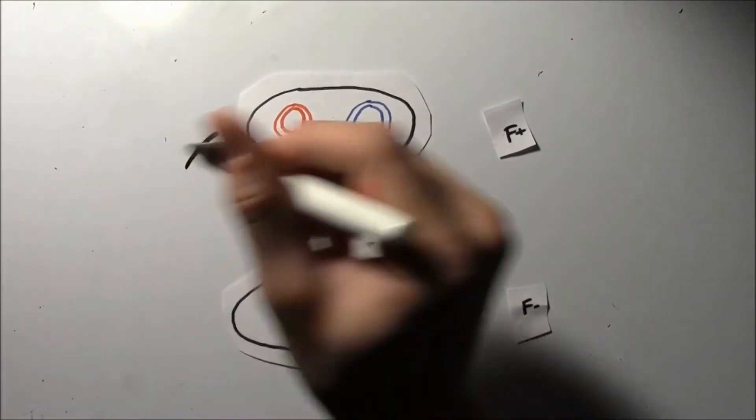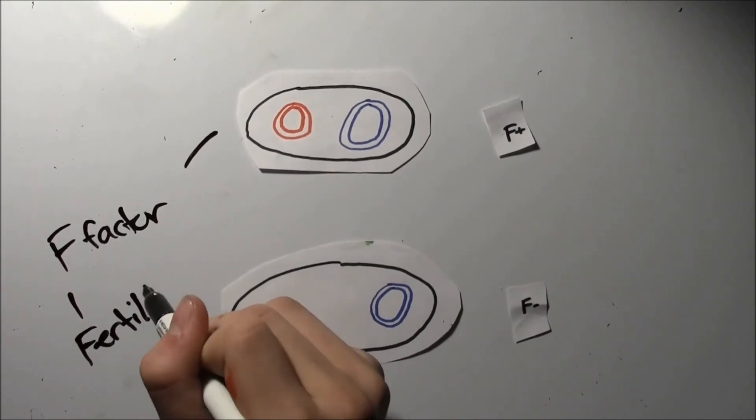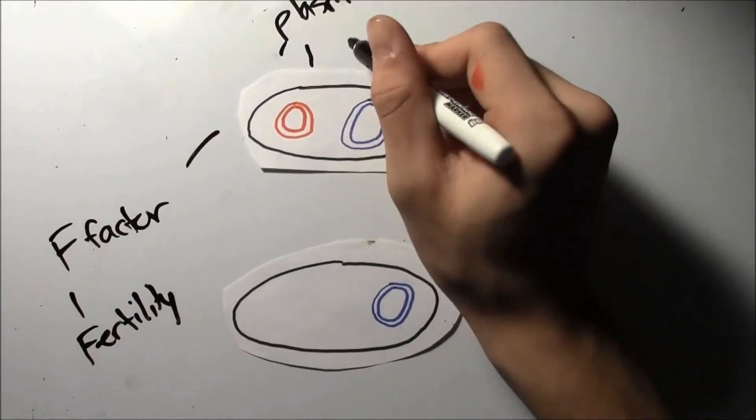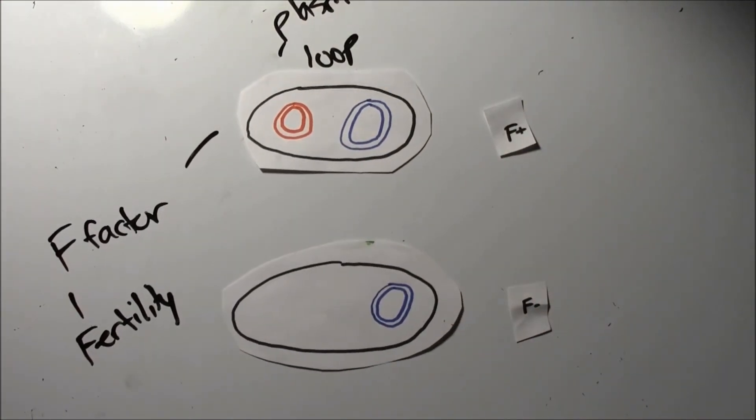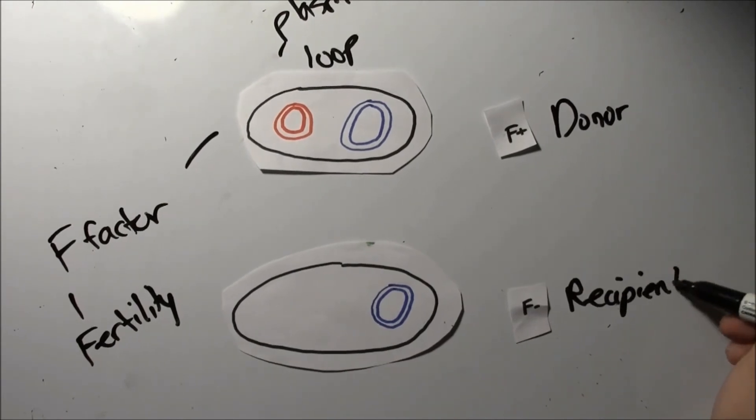In conjugation, a plasmid in one of the cells called the F-factor, where the F stands for fertility, creates two bacterial cell types: F-plus with the factor and F-minus without the factor. The F-plus cell is also known as the donor cell, while the F-minus cell is called the recipient cell.